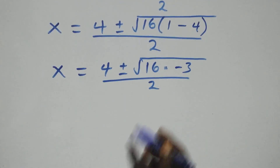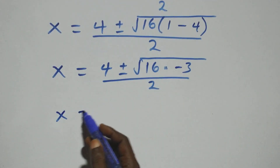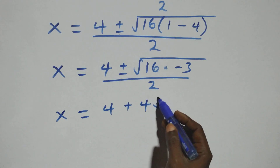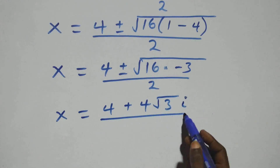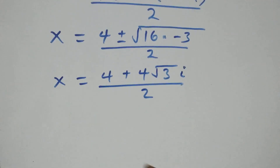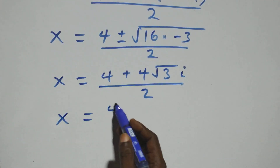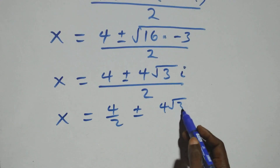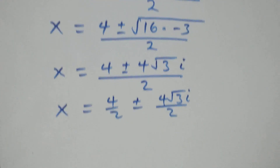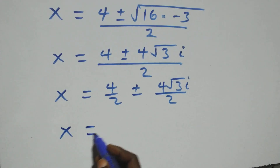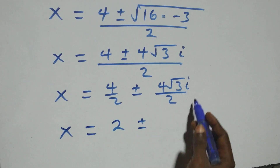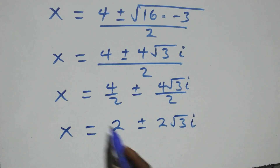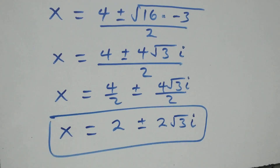Separating the square root, root of 16 is 4, so we have x equals to 4 plus or minus 4 times root of minus 3, which is the same as root 3 times i, all over 2. This simplifies to x equals 4 over 2 plus or minus 4 root 3i over 2, giving x equals 2 plus or minus 2 root 3i. These are 2 complex solutions.